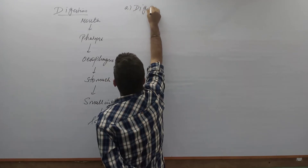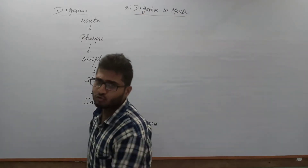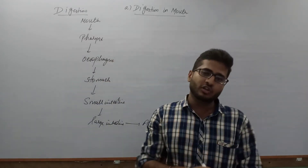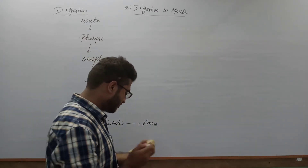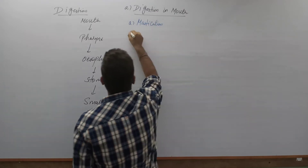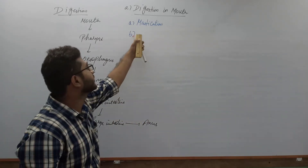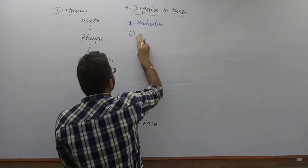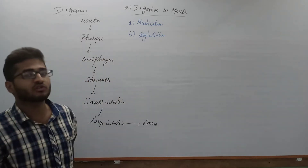Mouth is mainly involved in two main processes. The first one is mastication — that is the grinding of food within the oral or buccal cavity. The second one is the facilitation of swallowing, which we call deglutition. Deglutition — d-e-g-l-u-t-i-t-i-o-n — means the process of swallowing the food.